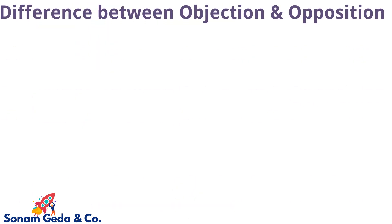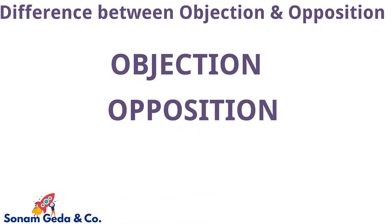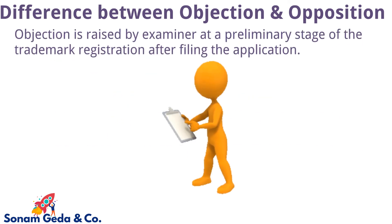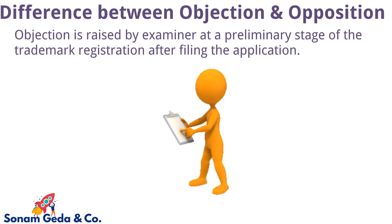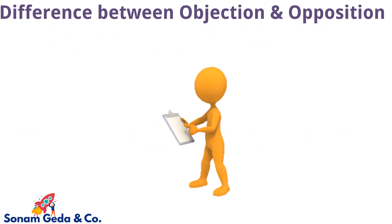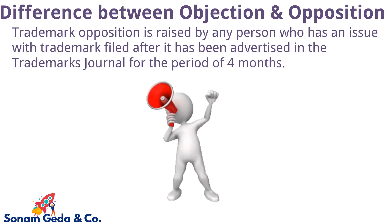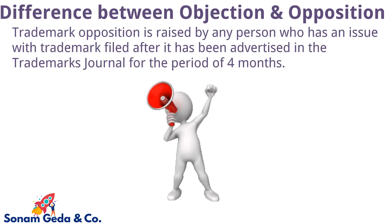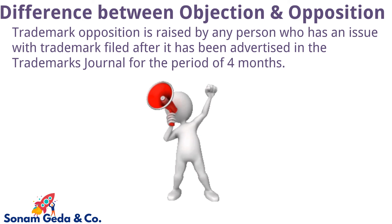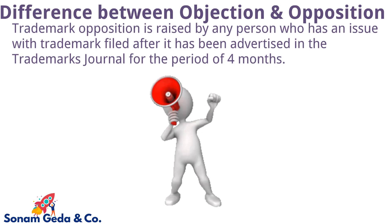Differences between objection and opposition: The main difference is that a trademark objection is raised by the examiner at a preliminary stage of trademark registration after filing the application, whereas trademark opposition is raised by any person who has an issue with the trademark after it has been advertised in the trademark journal for a period of 4 months.